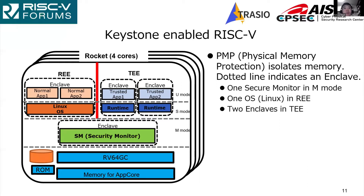In this figure, the dotted line indicates an enclave created by PMP. The creation of enclaves is managed by the security monitor, which is the basement of Keystone. One enclave is used for the security monitor running on machine mode, one enclave is used for Linux in REE, and two enclaves are used for trusted applications in TEE. Unfortunately, the original Keystone has no root of trust.